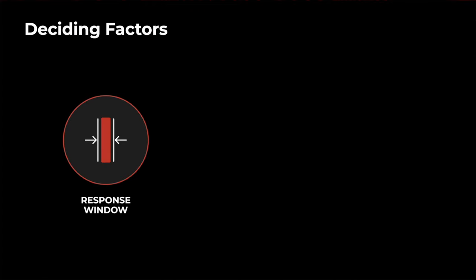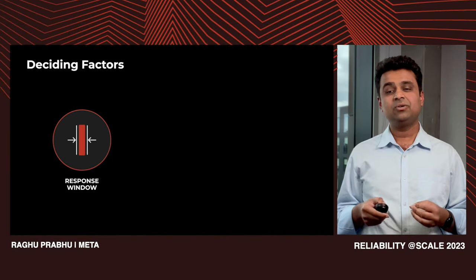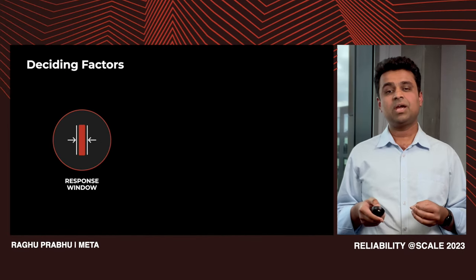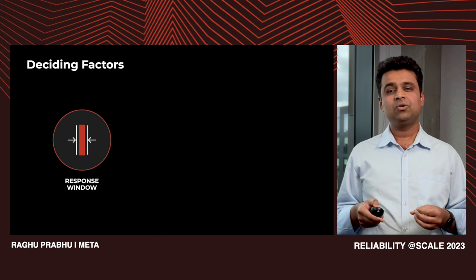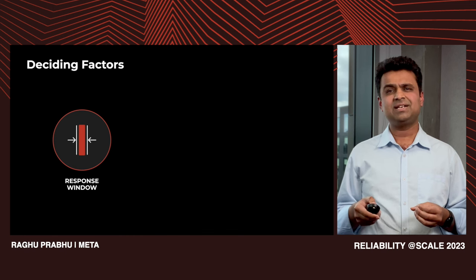In terms of deciding factors, the key ones were: number one, response window — this relates to the window of response available to us once notified by the grid provider, which was a matter of a few hours or mere minutes. We are talking about the case where the response window was in the order of a few hours, due to the presence of generators in addition to rack battery units.